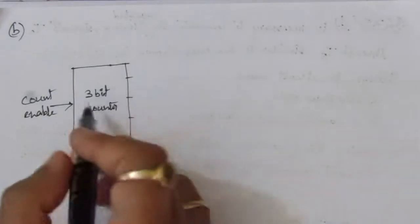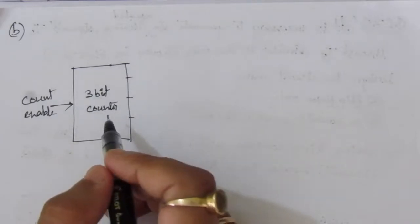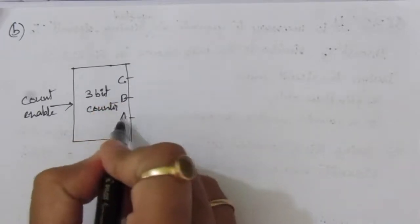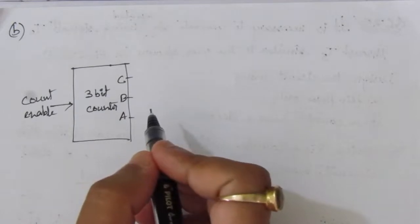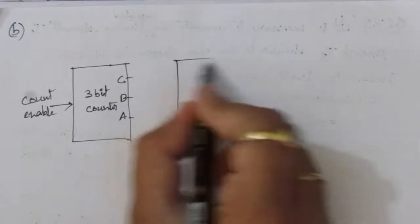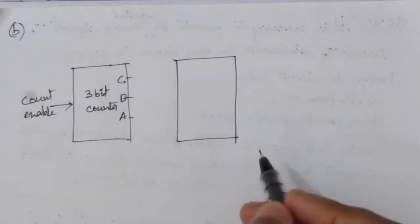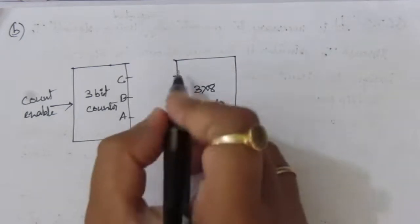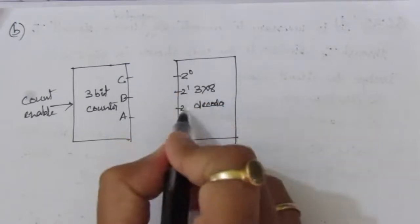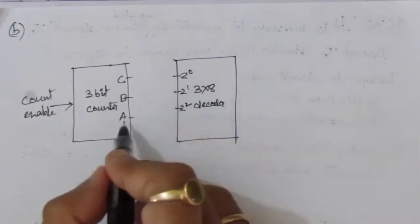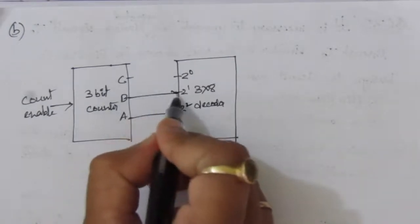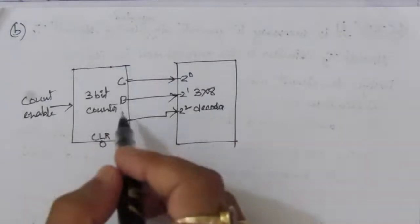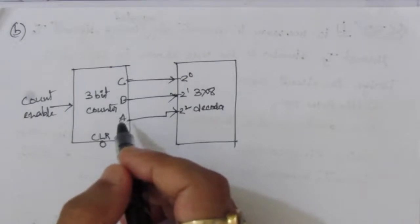Here we have a 3-bit counter with a count enable and 3 outputs C, B, A, where A is the most significant bit. This 3-bit counter can go from 0,0,0 up to a maximum of 1,1,1. We need to use a 3x8 decoder because we need 6 output timing signals. The decoder has 3 inputs: 2^0, 2^1, and 2^2 (most significant bit), connected to A, B, and C respectively.